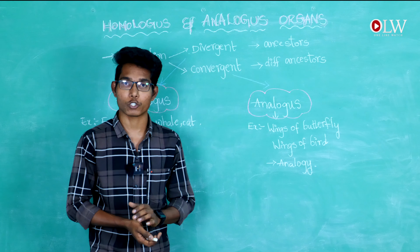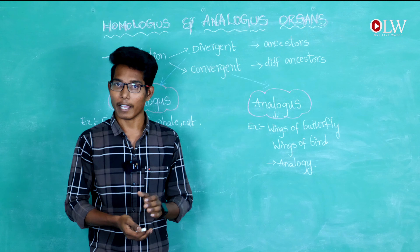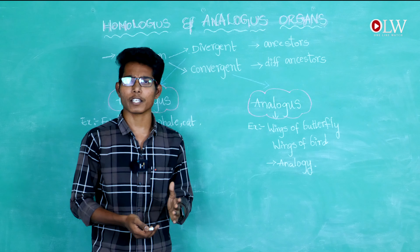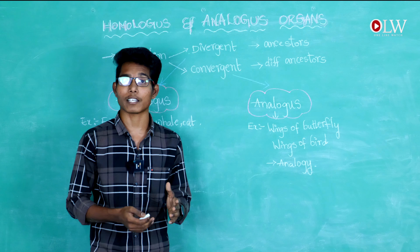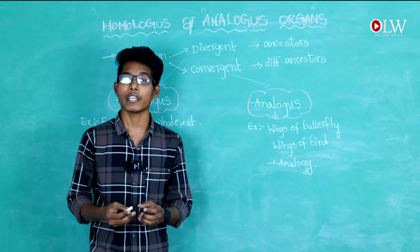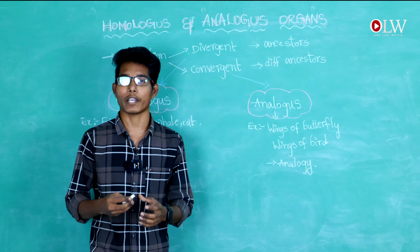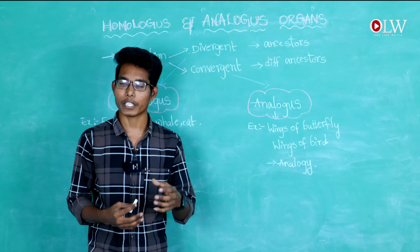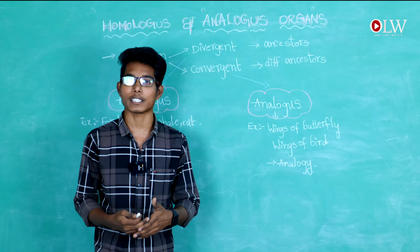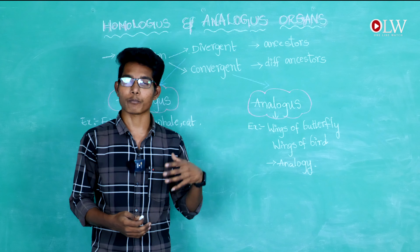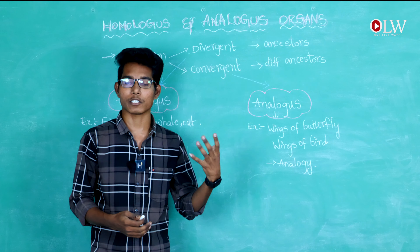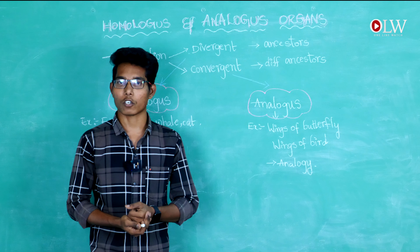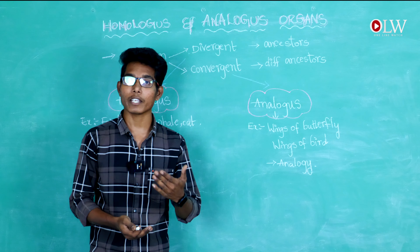Returning to the context of evolution, homologous organs reflect the evolutionary changes that occur in genes or species — the gradual changes that accumulate from ancestors over generations.